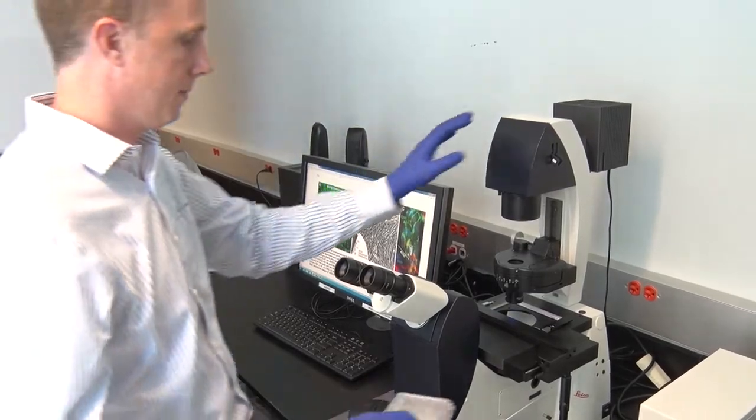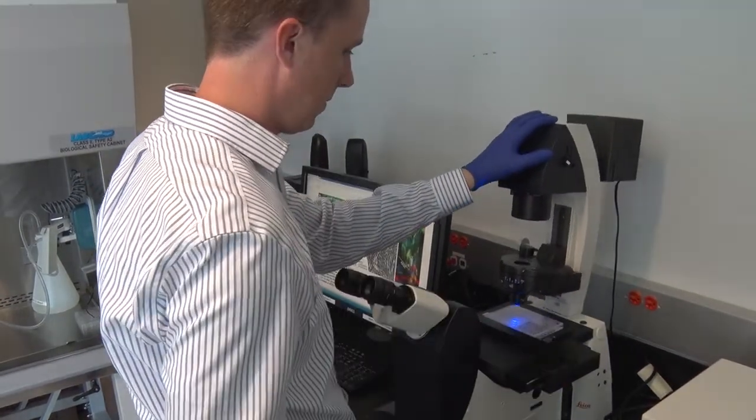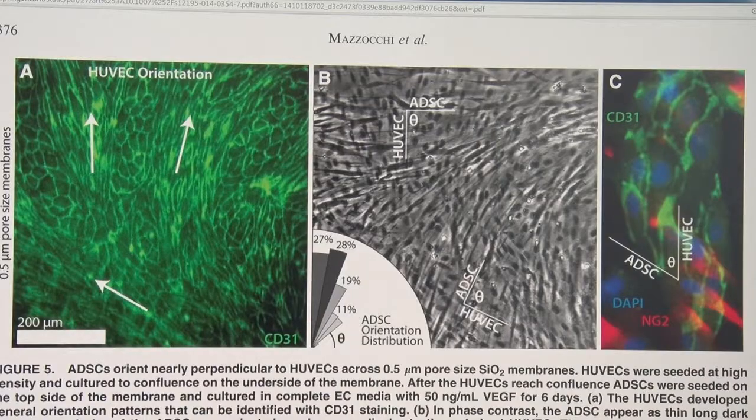One of the major challenges in creating replacement organs and tissues is producing a functional vascular network. This vascular network or vascular system is essential for the organs to survive once transplanted because we need to transport blood, oxygen, and nutrients into these new tissues.